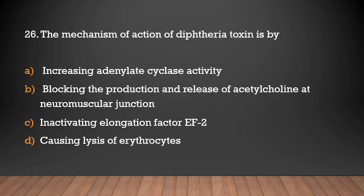The mechanism of action of diphtheria toxin is by: increasing adenylate cyclase activity; blocking the production and release of acetylcholine at the neuromuscular junction; inactivating elongation factor EF2; or causing lysis of erythrocytes.